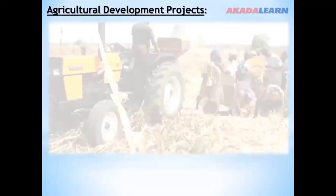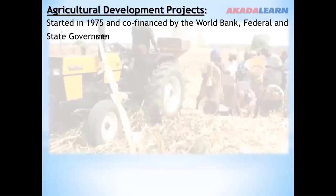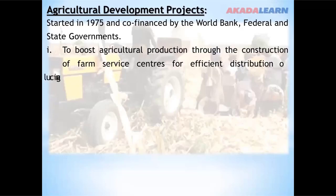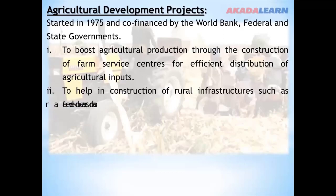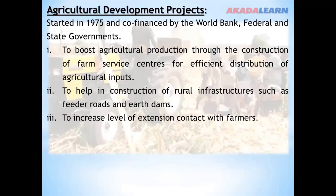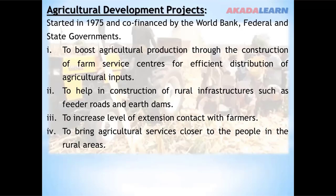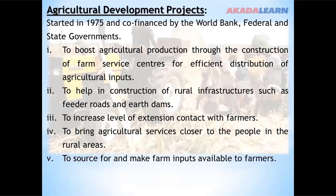Agricultural Development Projects started in 1975 and were co-financed by the World Bank, federal and state governments. The aim is to boost agricultural production through construction of farm service centers for efficient distribution of agricultural inputs, to help in construction of rural infrastructure such as feeder roads, to increase the level of extension contact with farmers, to bring agricultural services closer to people in rural areas, to source for and make farm inputs available to farmers, and to help in the reclamation of greater agricultural lands.